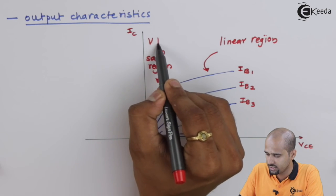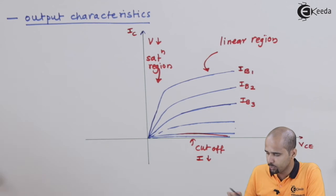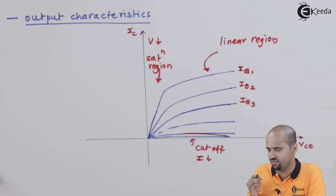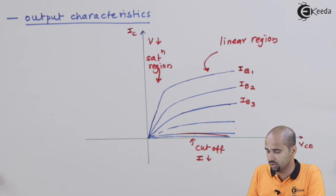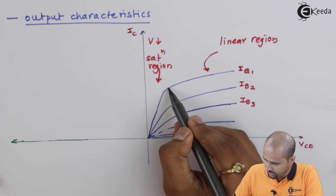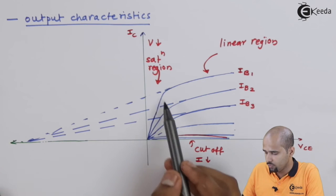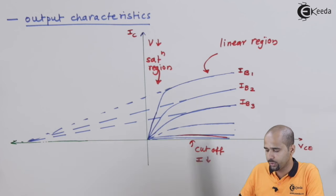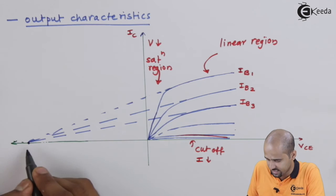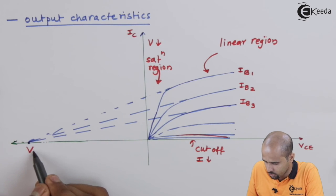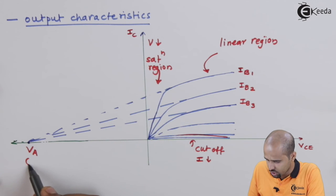So far we have discussed the output characteristics — the change of Ic with respect to Vce for specific values of Ib. Now it is time to learn about the early voltage. If we draw tangents on the output characteristic curves for Ib1, Ib2, and Ib3, these tangents all intersect on the x-axis at a specific point, and that particular voltage is called the early voltage, denoted by Va.